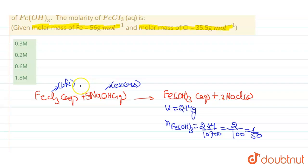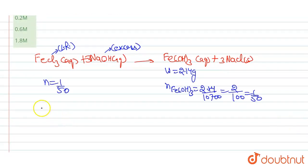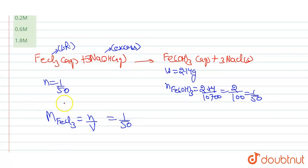To find the molarity of FeCl₃, we need the moles of FeCl₃. Since one mole of FeCl₃ forms one mole of Fe(OH)₃, then 1/50 moles of Fe(OH)₃ means 1/50 moles of FeCl₃. So moles of FeCl₃ = 1/50.